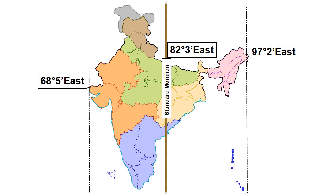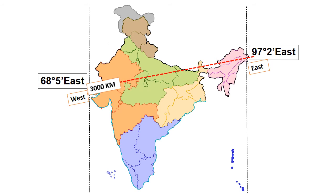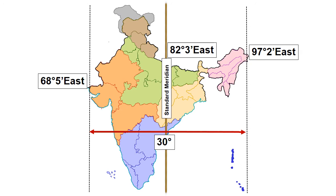The time zones were decided on the basis of longitudes. India stretches around 3,000 kilometers from east to west, spanning roughly 30 degrees of longitude, and the local time at each longitude is different. But India has only one time zone.